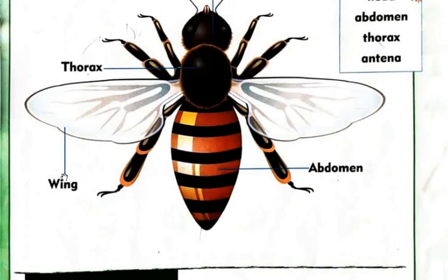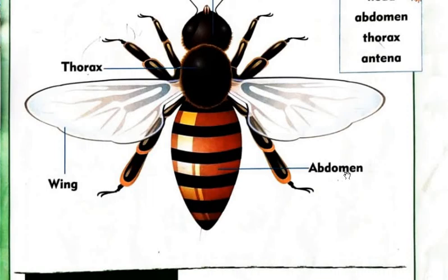Next one is abdomen. Abdomen. Again: abdomen. So this is the big part which is called abdomen.